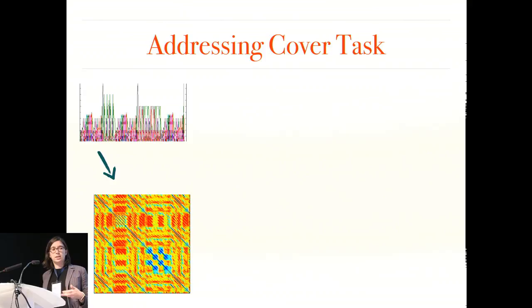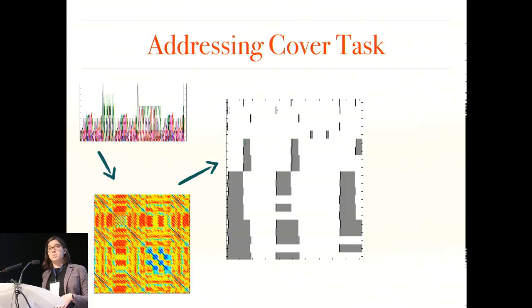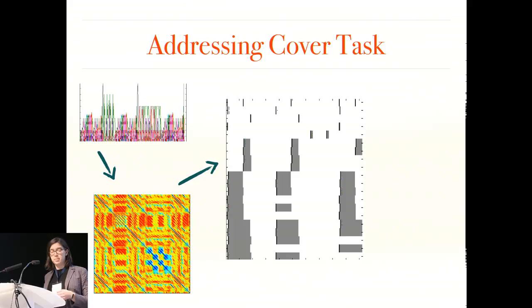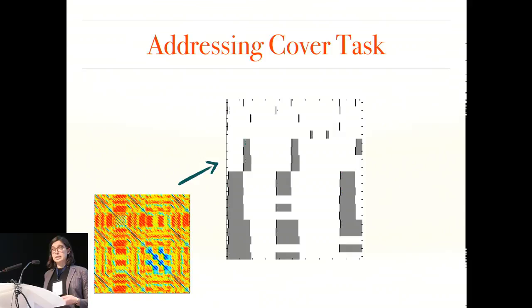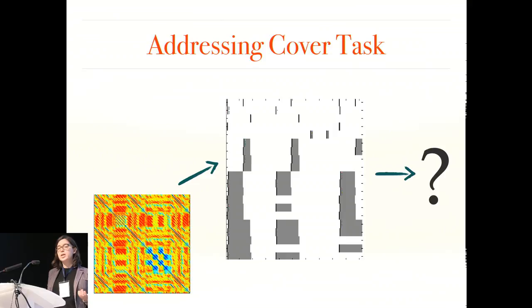The aligned hierarchies have a nice classification metric but can only make nuanced comparisons when data has exactly the same number of beats or time steps — not a great assumption for the cover song task. Instead of a total comparison like SNL diagrams, we do a section-based comparison, which is the inspiration for the Aligned Sub-Hierarchies (ASH). The aligned sub-hierarchies are the set of aligned hierarchies that are proper subsets of the original aligned hierarchies — we're making comparisons of repeats that themselves have repetitive structure within them.